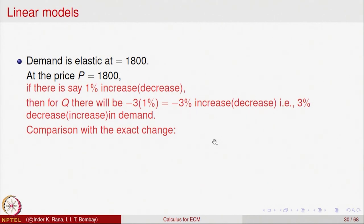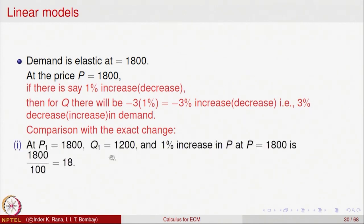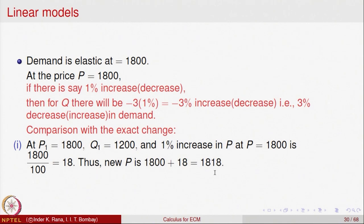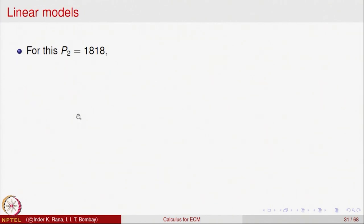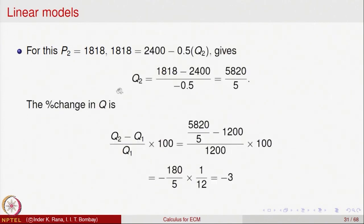Let us compare with the exact change to see how good the coefficient of elasticity is as a measure of responsiveness. At price P1 = 1800, Q1 = 1200. A 1% increase in price gives a new price of 1818. From the linear demand equation we calculate Q2, and the percentage change (Q2 − Q1)/Q1 × 100 simplifies to be equal to minus 3.